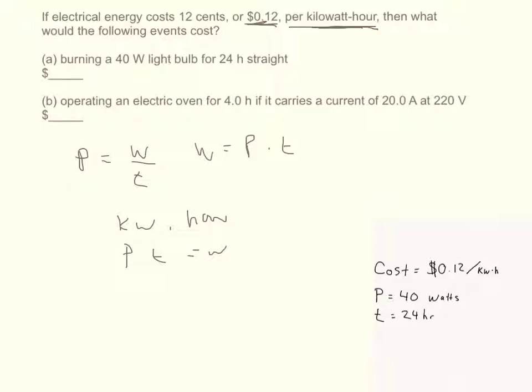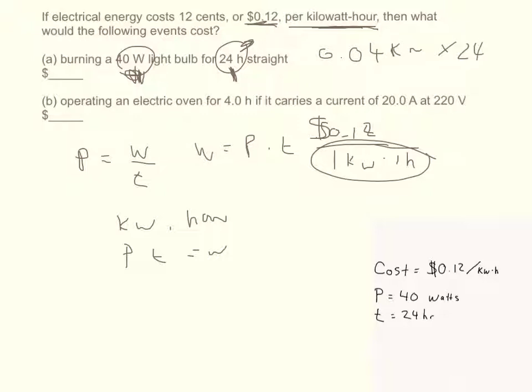So I have 0.12 dollars over 1 kilowatt times 1 hour. I'm given units of watts and hours. So I have a choice of either converting this to kilowatts, or converting my kilowatt hours to joules times seconds, and then converting the 24 hours to seconds. So it's much easier just to convert this to kilowatts. So you get 0.04 kilowatts times 24 hours, and then you just put that as the denominator over 0.12.